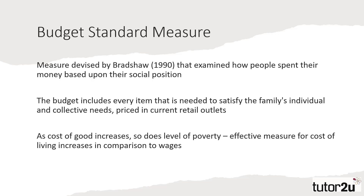A third measure, similar to the minimum income measure, is the Budget Standard measure. Devised by Bradshaw, it measures the cost of commonly acquired items. The Budget Standard measure includes items that will satisfy the needs of a family's individual and collective needs, and includes social and cultural events, leisure and other aspects of ordinary life that some sociologists would suggest should be sacrificed when in poverty.